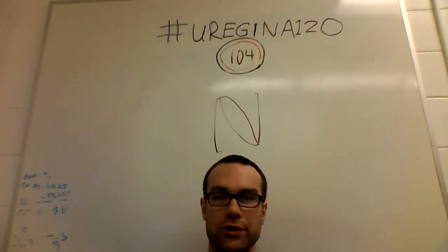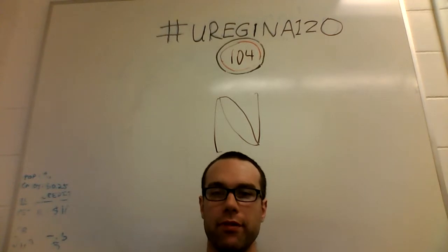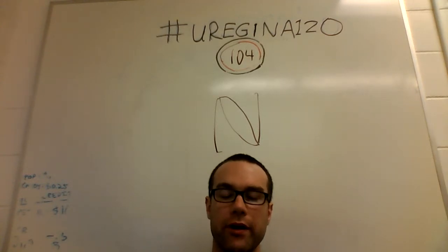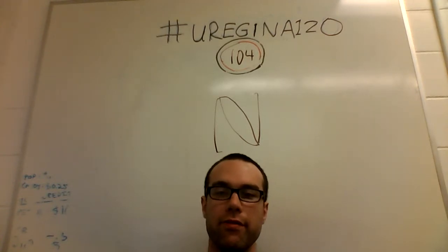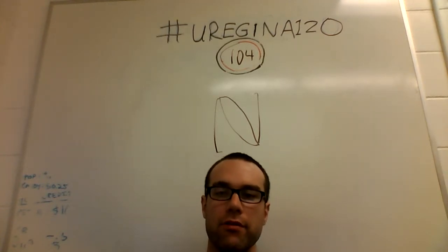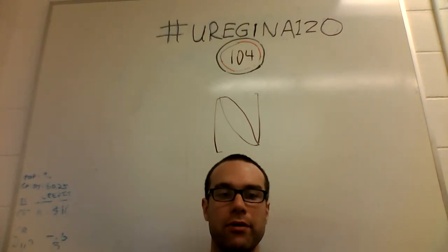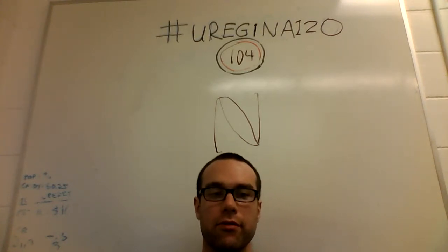Welcome back to uRegina 120. I am Jeff Cliff and this is a series of 120 videos of things that I learned as a student of computer science at the University of Regina. And today we're going to be talking about numbers.